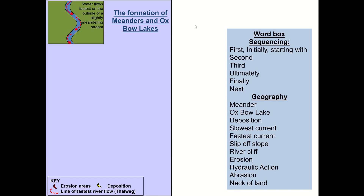In the top diagram, water flows fastest on the outside of a slightly meandering stream — to the outside of the bend where the water flows at its quickest. You can see the areas on the outside of the bend are the erosion areas, because the water's quickest. You get hydraulic action occurring there — the shear force of the water — and abrasion where rocks are thrown into the banks.